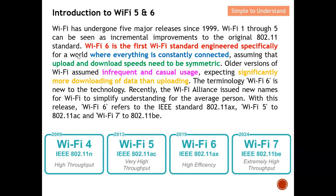Wi-Fi 6 is the first Wi-Fi standard that is engineered specifically for a world where everything is constantly connected. Wi-Fi 6 is basically designed so that the device will be continuously connected to the Wi-Fi router. They also assume that upload and download speed need to be symmetric — basically they allocate equal time for both upload and download.